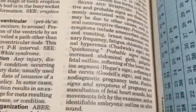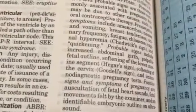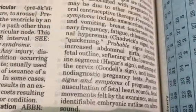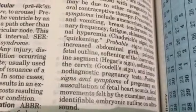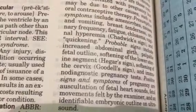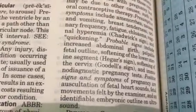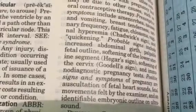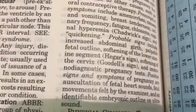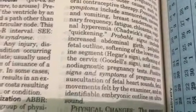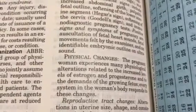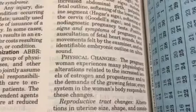Probable signs include increased abdominal girth, palpable fetal outline, softening of the lower uterine segment (Hegar sign), softening of the cervix, Goodell sign, and immunodiagnostic pregnancy tests.